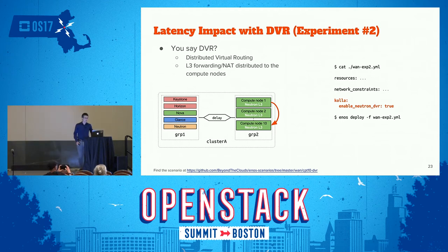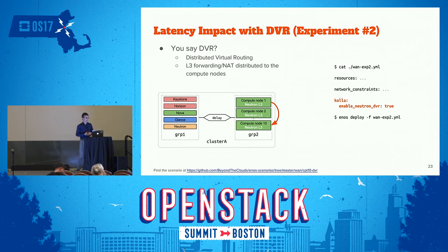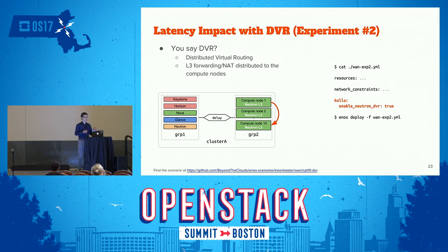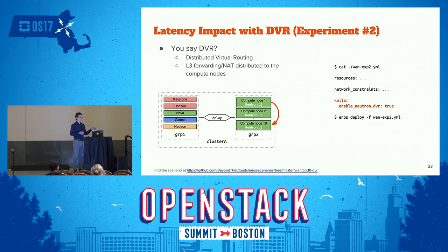Moving on to the second experiment — an extension of the latency work. We saw a high impact on traffic between VMs. We can help that by using DVR — Distributed Virtual Routing. Instead of having all layer-3 forwarding done by a centralized Neutron on the controller node, these mechanisms are moved to the compute nodes and distributed across all resources. This means inter-VM traffic is not impacted by the delay between the two groups. To enable this in ENOS, it's very easy — just add one key-value pair to the local config and you get DVR.